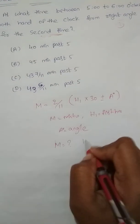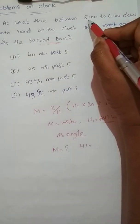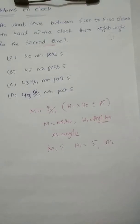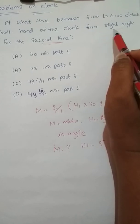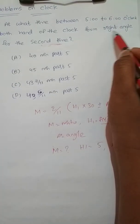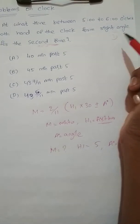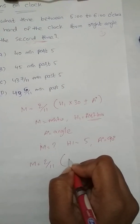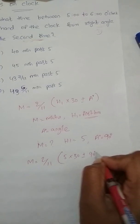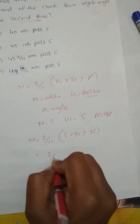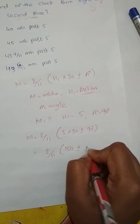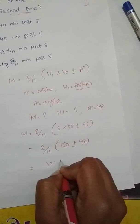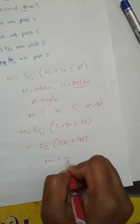Let M be the minutes, H1 is the first hour. H1 is 5. The angle in the question is a right angle, so the angle is 90 degrees. The formula is: M = 2/11 × H1 × 30 ± 90 degrees. So M = 2/11 × (5 × 30) ± 90 = 2/11 × (150 ± 90) = 2 × (300 ± 180) / 11.